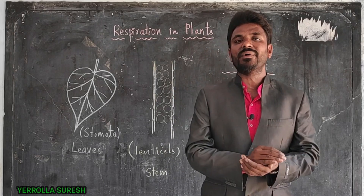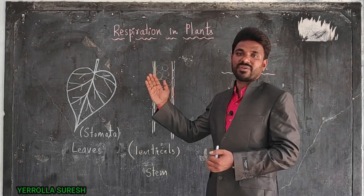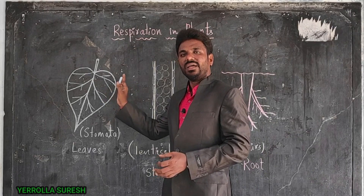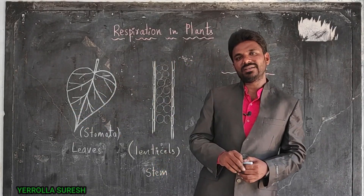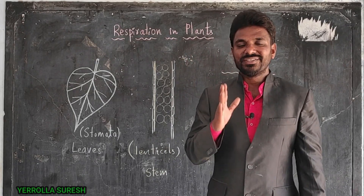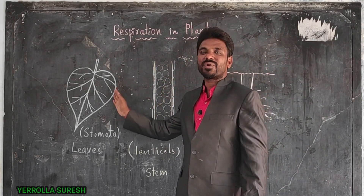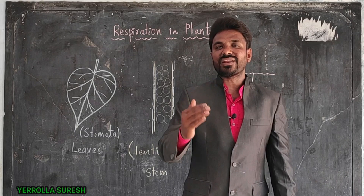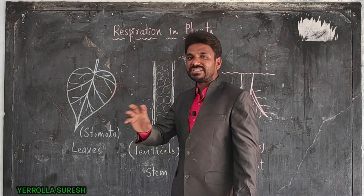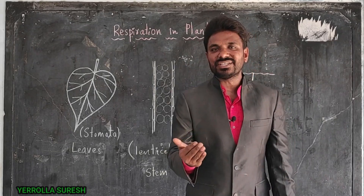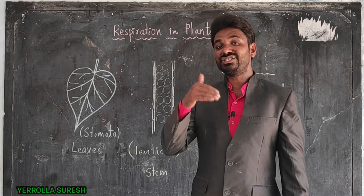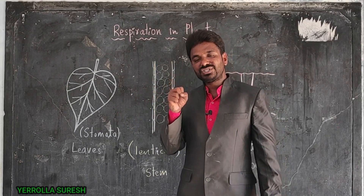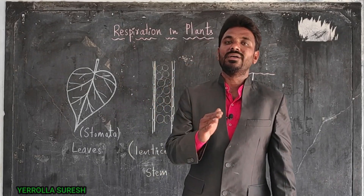Let's learn in detail how leaves, stems, and roots perform respiration. Leaves are very important parts of the plant body because they perform photosynthesis — the process in which food material is manufactured by utilizing different substances. In photosynthesis, leaves receive carbon dioxide and release oxygen. But in addition to photosynthesis, leaves also perform respiration: they take oxygen in and release carbon dioxide, just like human beings and other animals.